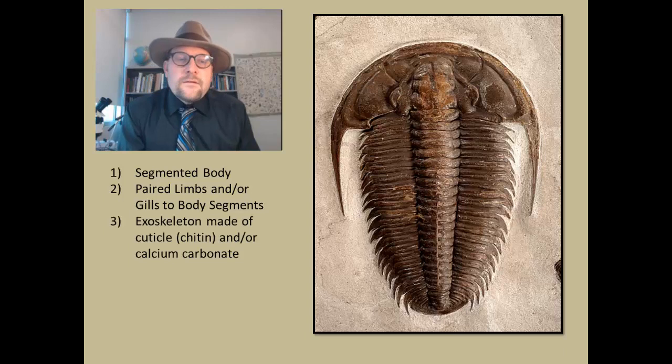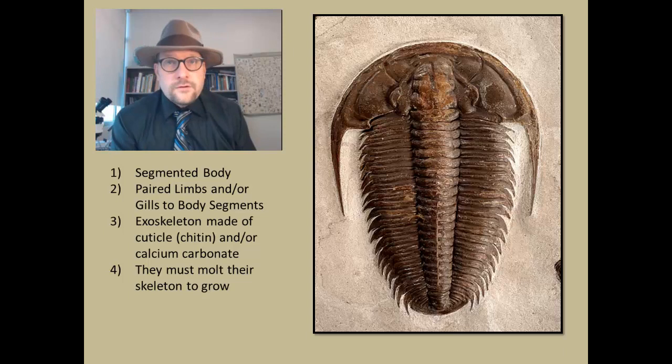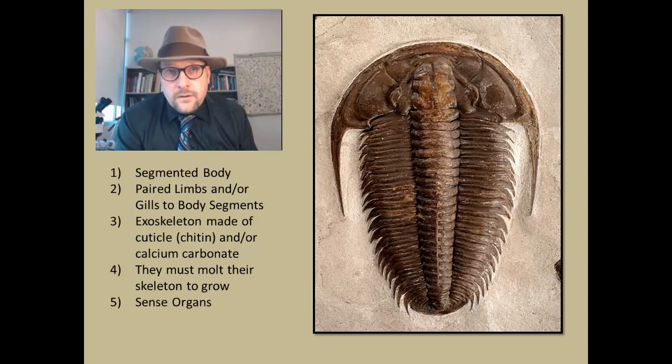They have an exoskeleton that is shed. This is made of cuticle chitin, or many times they will be formed out of calcium carbonate—that is what trilobites do. So they have an external skeleton. They must molt their exoskeleton to grow. This means that many groups undergo morphological change with each shed of the exoskeleton, and many groups undergo radical metamorphosis, such as caterpillars to butterflies.